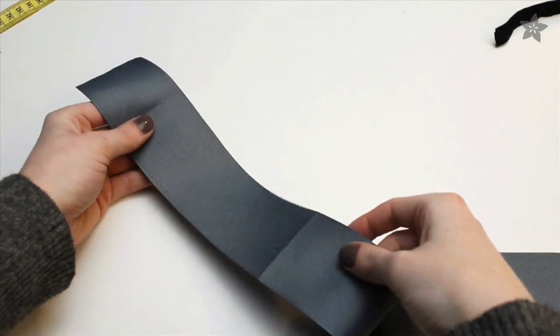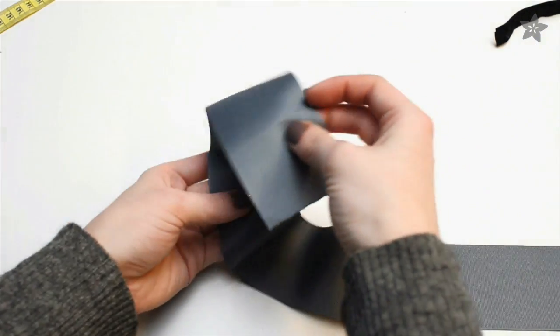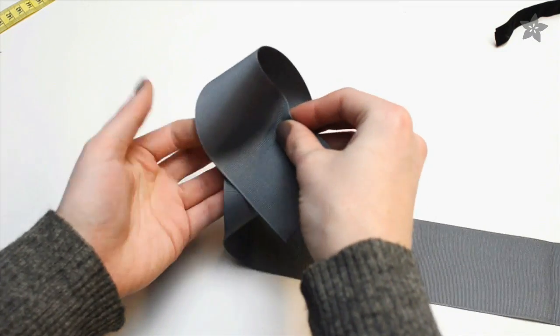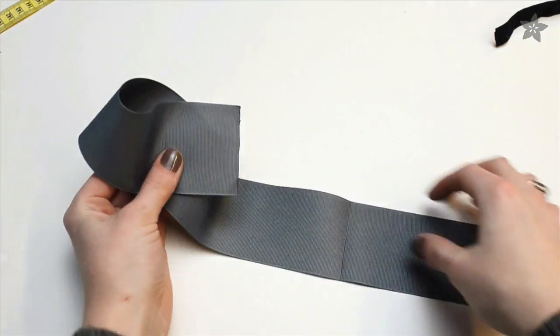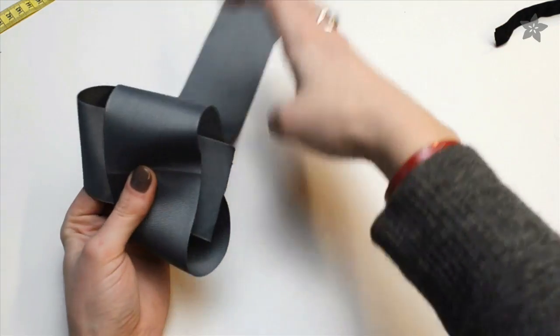To make the loops of the bow, find the first two creases and fold your ribbon over so they intersect, but then make a slight pivot so they're at a 45 degree angle. Then grab your center crease, fold that on top of the pile again at a 45 degree angle, but in the other direction.